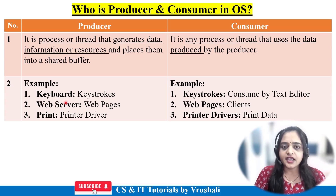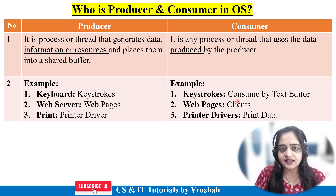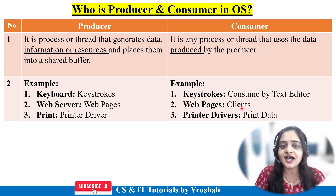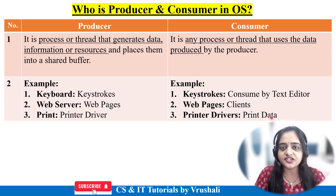Suppose you want to enter data into a Microsoft Word file using the keyboard. When you type particular keys, they generate keystrokes — so the keyboard produces the keystrokes, and this keystroke data is typed into the Word file or any other text editor. The keyboard produces the keystrokes and those keystrokes are consumed by the text editor. Another example: a web server produces multiple web pages, and these web pages are consumed by clients. Another example is the printer — when you perform a print command, printer drivers produce the information, and this information is used by the customer for printing. This is what we mean by producer and consumer in operating system.